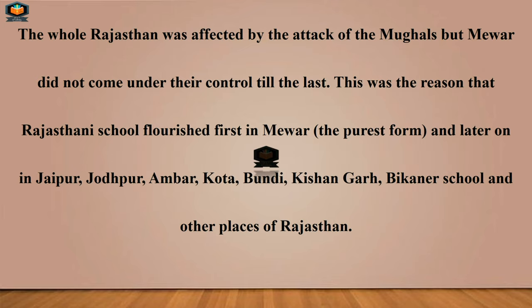Pura Rajasthan Mughals ke control mein aa gaya tha, but jo Mewaar area tha, woh bilkul out of control raha — Mughals ke control mein nahi tha. This was the reason that the Rajasthani school flourished first in Mewaar, and later on in Jodhpur, Amber, Bundi, Kishanagad, Bikaner, and other places of Rajasthan.